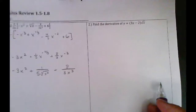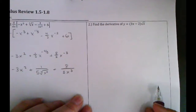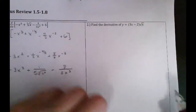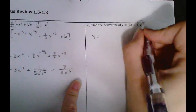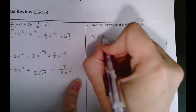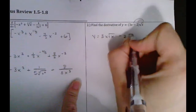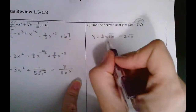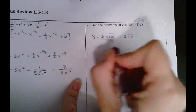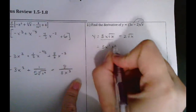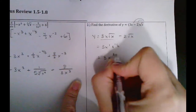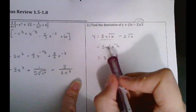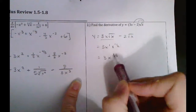For this one, you can either use the product rule or you can simplify first. I think it's easier if you simplify first. So for example, if you distribute the square root of x, you get three x root x minus two root x. And if you look at this as exponents, you can simplify that term to three x to the three halves, because one plus a half is one and a half, and one and a half as a fraction is three halves.